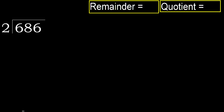686 divided by 2. 6 is not less, therefore start with 6. 2 multiplied by which number is nearest to 6, but not greater?